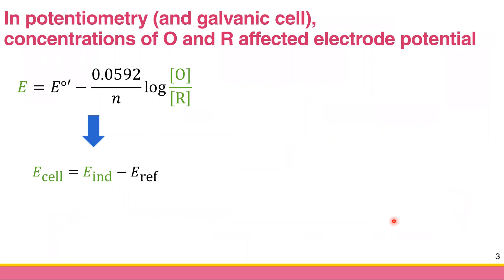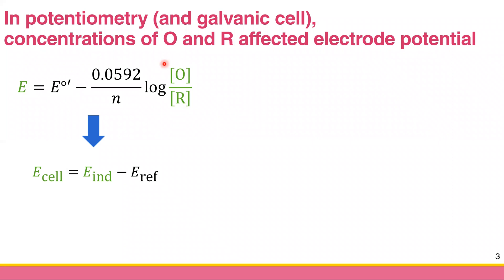The central idea centers around the Nernst equation. From the last chapter on potentiometry, we know that the concentration of the oxidized species (O) and reduced species (R) affects the electrode potential. If we change O or R, that changes E, the electrode potential. The mathematics is the same for ion-selective membrane electrodes. So we can measure E_cell and calculate back to the concentration of the analyte — that's potentiometry.